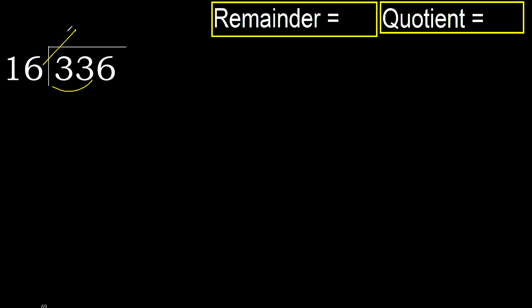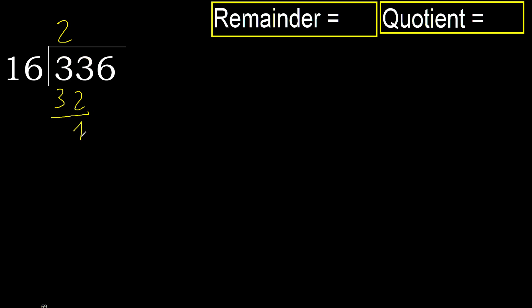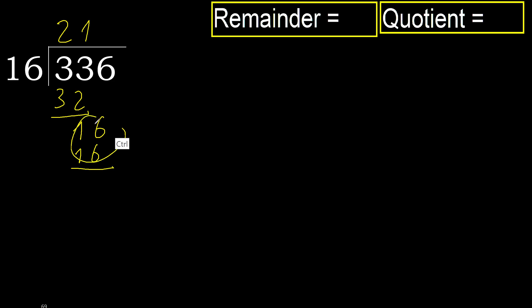16 multiplied by 2 is 32, which is not greater. 33 minus 32 is 1. Next, bring down 16. 16 multiplied by 1 is 16. 16 is not greater, ok.